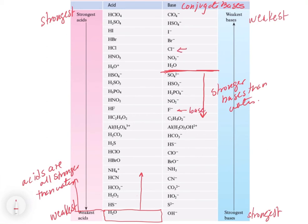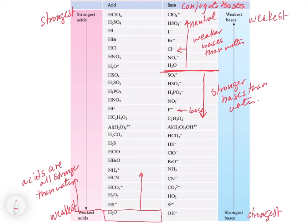Cl⁻, on the other hand, is above water in terms of bases — it's a weaker base than water. If it's a weaker base than water, it will not act as a base. Water will be the stronger base, so Cl⁻ will not act as a base. In essence, these species above water are neutral — the weaker bases than water will be neutral in water and will not do anything.